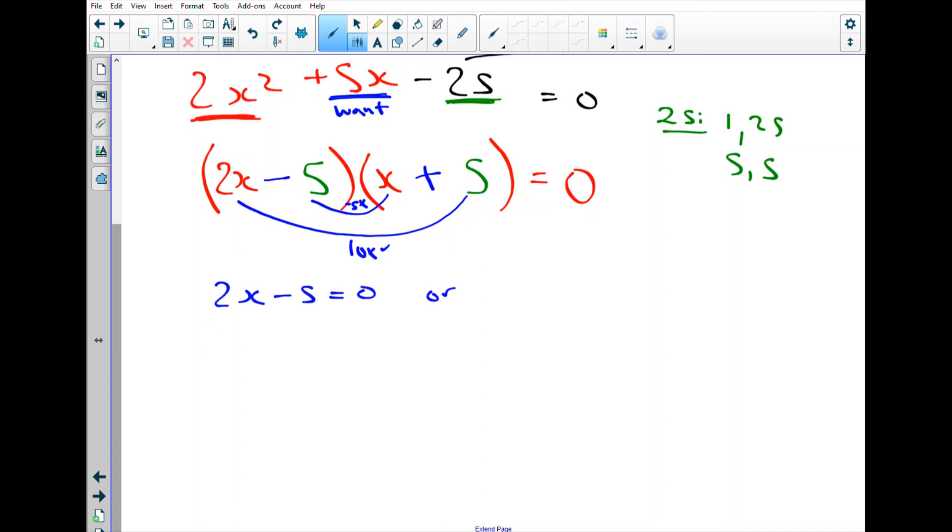But just using the zero product property, setting each binomial equal to zero now that we have factored gives us our solution. So 2x equals 5, which means x equals 5 over 2. And finally, solving the other guy, we get x equals negative 5. So here are two solutions from our proportion.